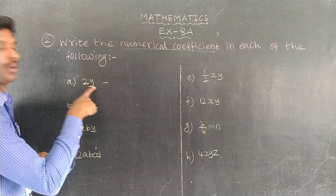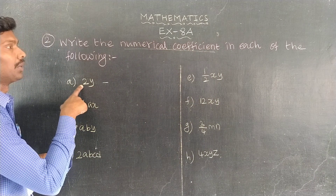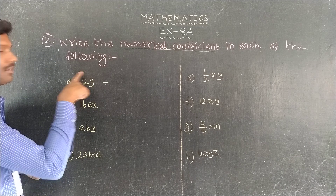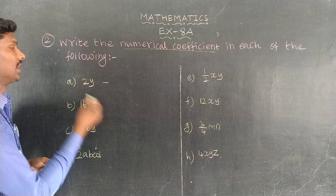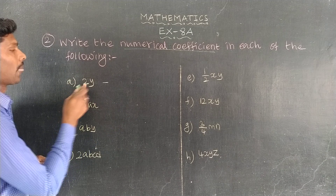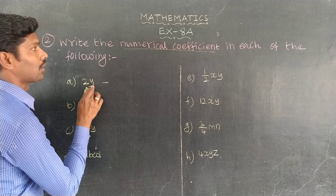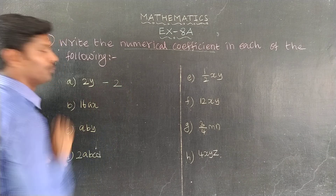2y is a variable. 2 is the number, and 2y is a variable.